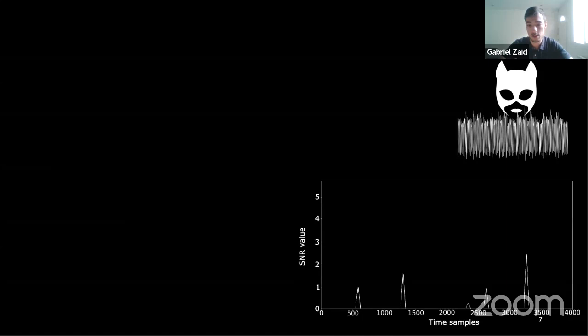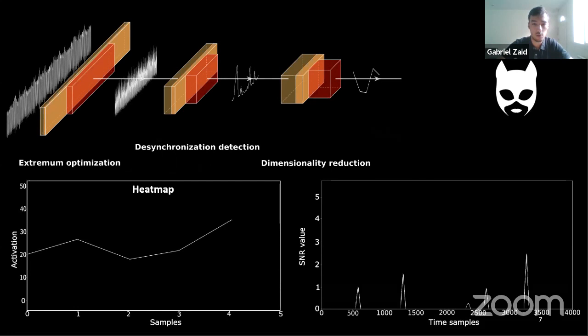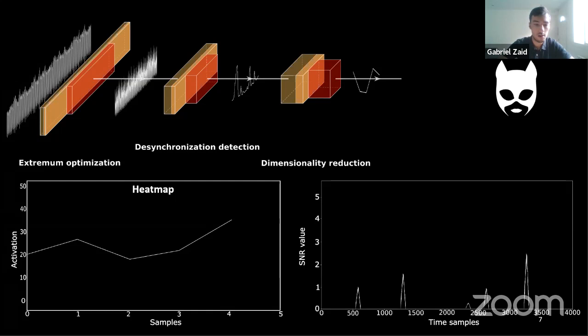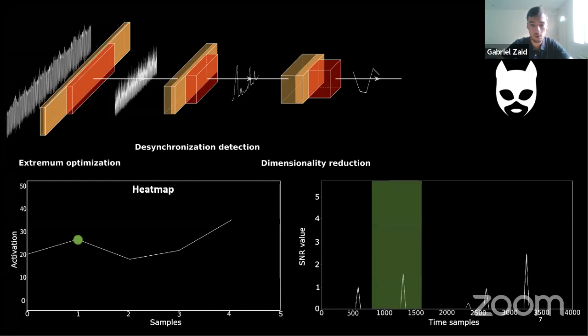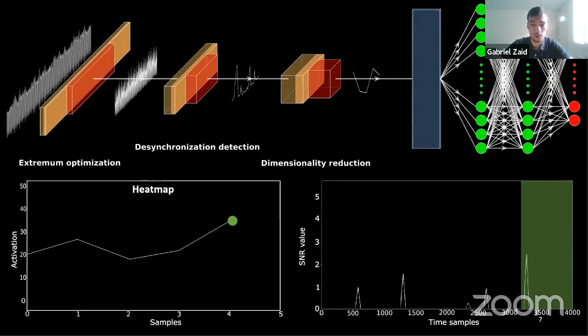Assuming an adversary has access to a physical device with a given SNR computation, our methodology generates a new convolutional part that drastically reduces the trace dimension. The intermediate trace obtained defines the amount of relevant information in different parts of the input — each output point corresponds to a segment of the input. This drastically reduces convolutional complexity and limits the desynchronization effect.